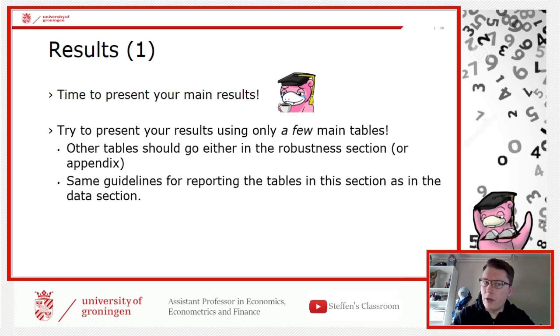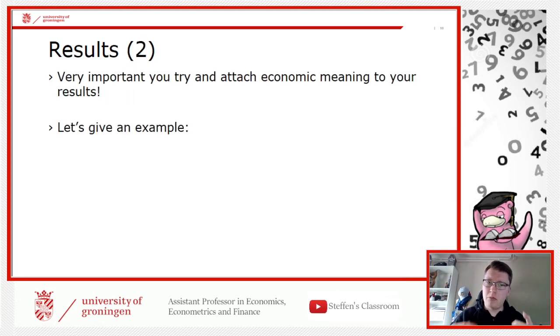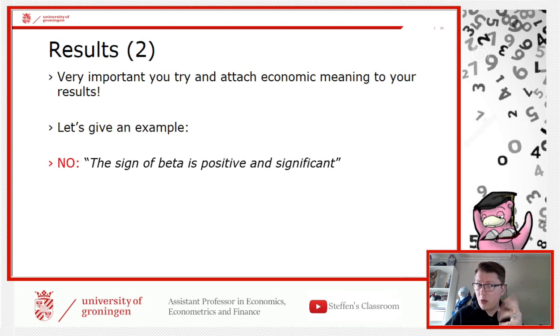The same guideline applies here as before, in terms of how to present them. Let's put in some do's and don'ts here. When you do your results here, not just state statistically what you see, but also try to give some meaning to them. Bring them to life. Let's start with a don't. You say here, the sign of beta is positive and significant. Well, that may be true, but it doesn't give any economic intuition. It's pretty just a dead sentence, just blah. This is boring.